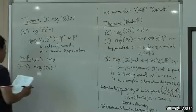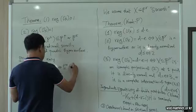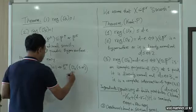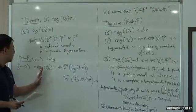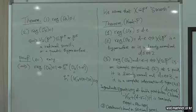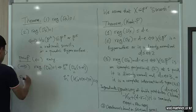Recall that the regularity of the structure sheaf being 1 implies that the top cohomology is 0. By Serre duality, if the regularity of O_X is 1, then H^0(K_X + (N−1)H) = 0.